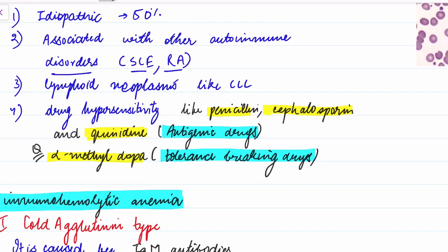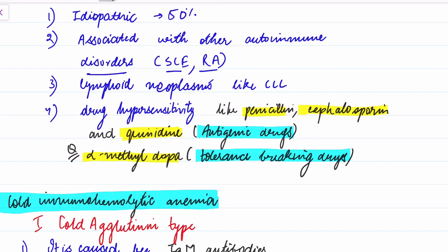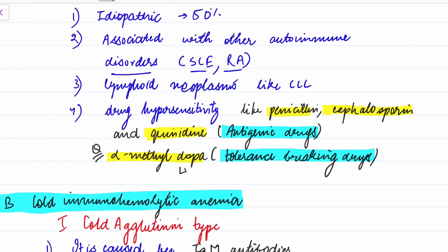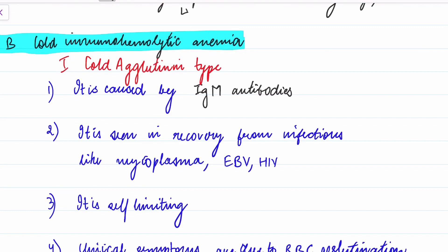Antigenic drugs are those that bind to the RBC membrane and form a complex with it, and then antibodies are formed against this complex of RBC membrane plus drug. In alpha-methyldopa, the mechanism is unknown, but antibodies are produced against the intrinsic antigens of the RBCs.